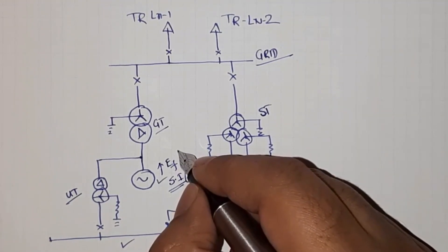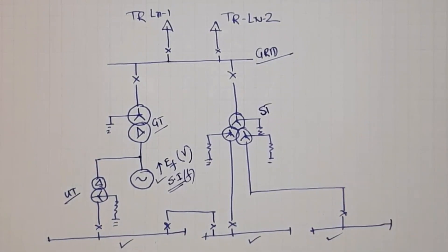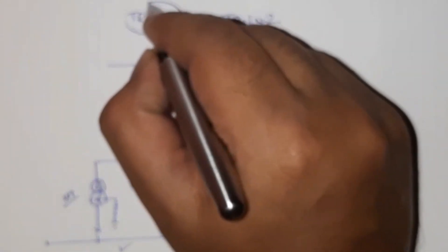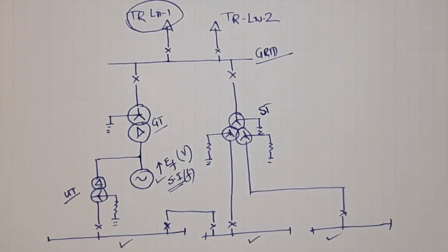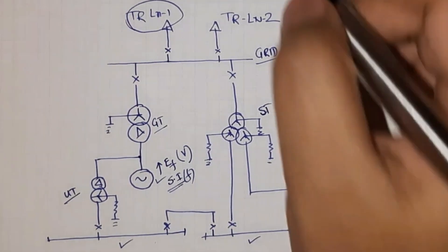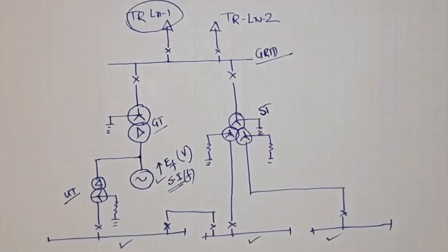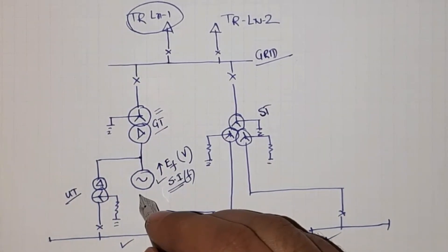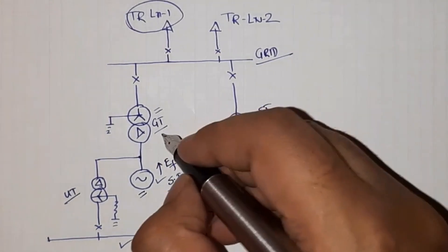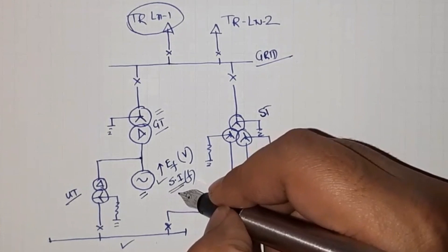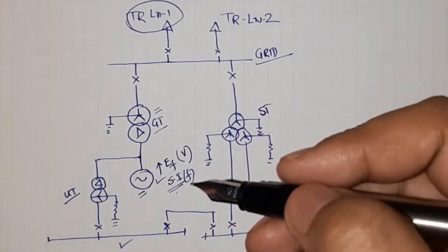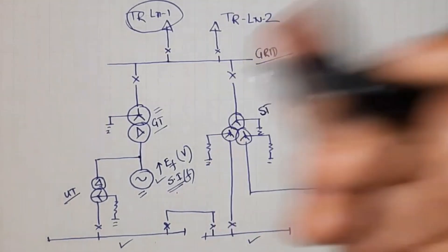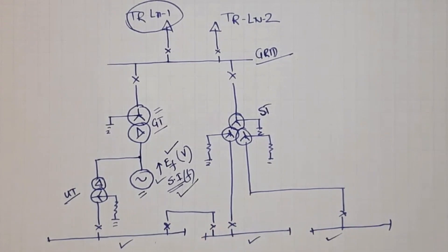A certain field voltage is set to maintain the voltage value. Now, what will happen if a transmission line suddenly trips? The transmission line is heavily loaded, so if one line is suddenly tripped there will be a huge load reduction on the system. The generator will not immediately respond — we still have a higher amount of steam input and field excitation set for the previous load. If the load is suddenly rejected, both the field excitation and frequency input will be in excess, so the voltage will increase and the frequency will increase.